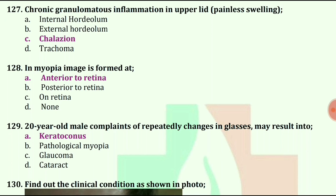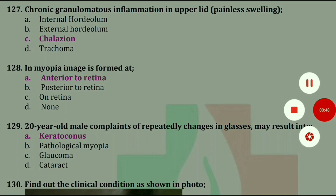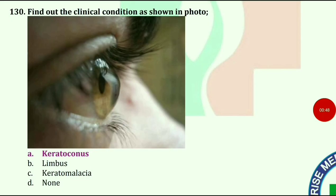20-year-old male with complaints of repetitive changes in glasses may result in keratoconus. Find out the clinical condition as shown in this photo. The answer is keratoconus.